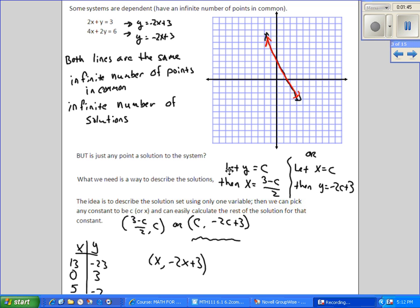So one way to do it is to say y equals some arbitrary constant, and then describe x in terms of that constant. Or we could say let x be an arbitrary constant, and describe y in terms of that constant. The idea is to have something so that we could easily then find pairs of values that are solutions to the equation.